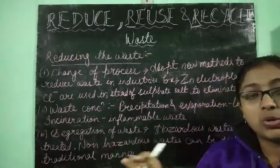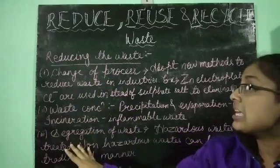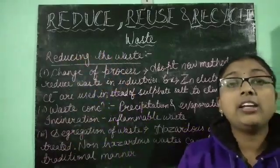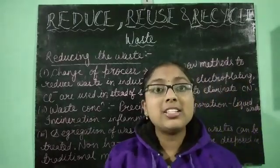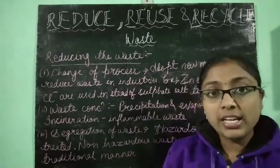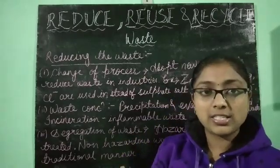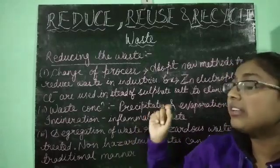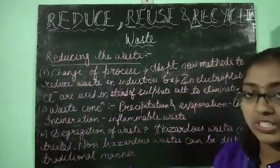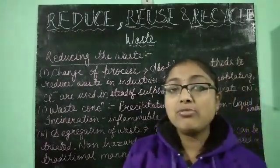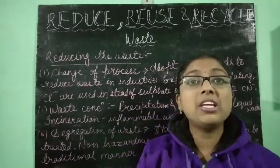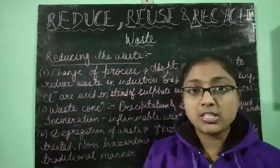Without wasting time, let's go into the chapter. First, we will discuss about reducing the waste — how we can reduce the amount of waste that is generated. Waste is mainly generated in industrial areas, that is in industries. So the first method is change of process. We have to change the process used in many industries to manufacture products.